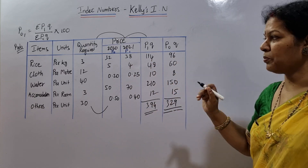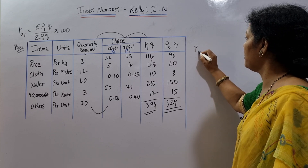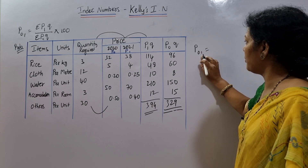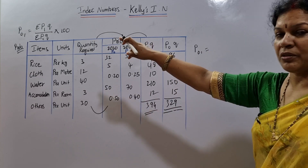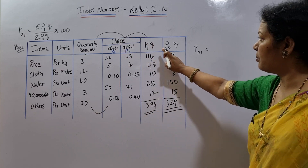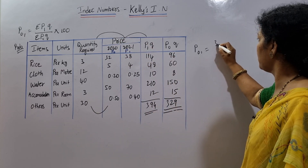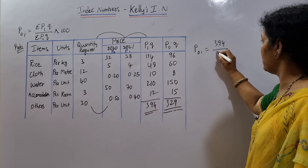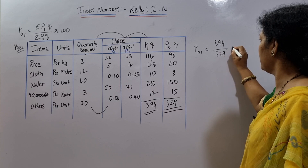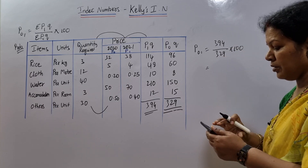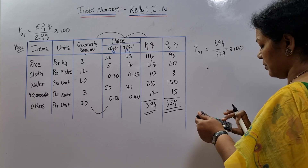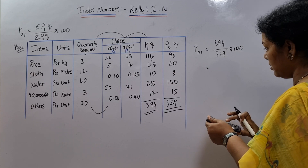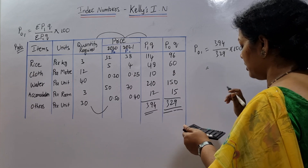As per the formula, we now have both totals. P01 is equal to sigma P1Q divided by sigma P0Q, into 100. Sigma P1Q is 394, sigma P0Q is 329. So it's 394 divided by 329, into 100, which comes to 119.8. That is the answer.